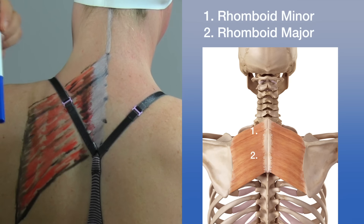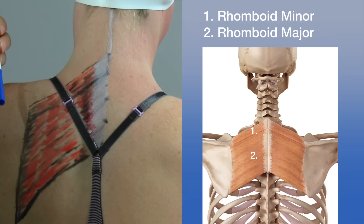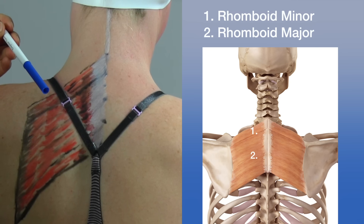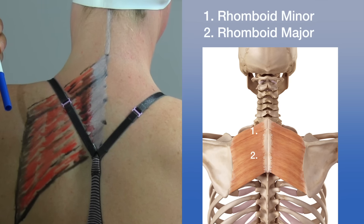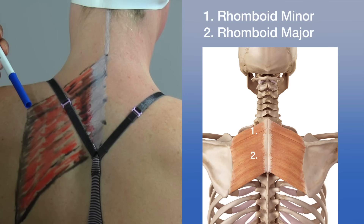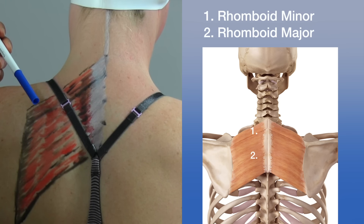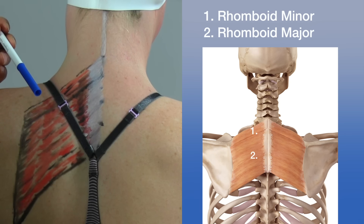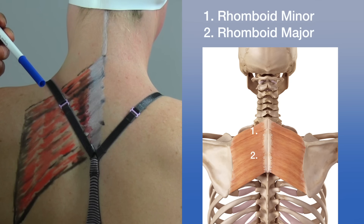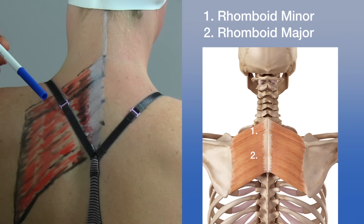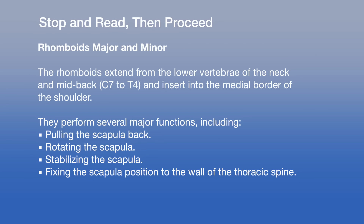The rhomboids are situated underneath the superficial trapezius but over the sacrospinalis, sandwiched between two muscle layers. The smaller rhomboid minor is positioned above the rhomboid major and inserts obliquely onto the medial border of the scapula. The rhomboid major is twice as large and also inserts along the medial border. Together, the rhomboids retract the scapula toward the vertebral column — also known as scapular adduction.